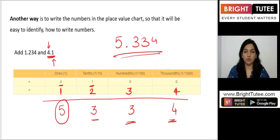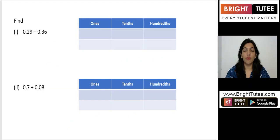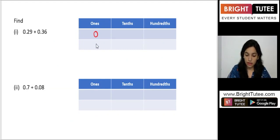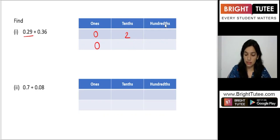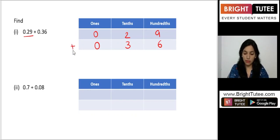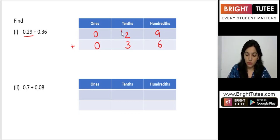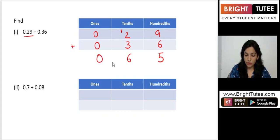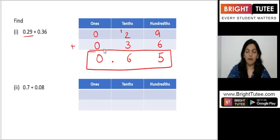Now let's find the sum of 0.29 and 0.36 using the place value chart. The ones digits are both 0. At the tenths place we have 2 and 3; at the hundredths place we have 9 and 6. Adding from right to left: 9 plus 6 is 15, write 5 and carry 1; 2 plus 3 plus 1 is 6; ones remain 0. The answer is 0.65.